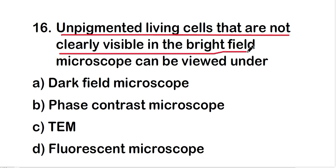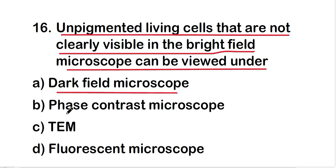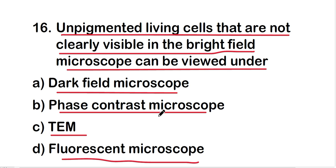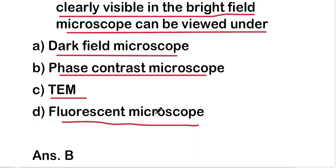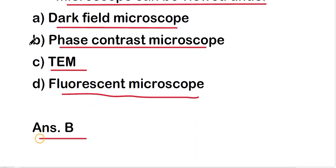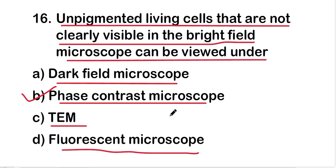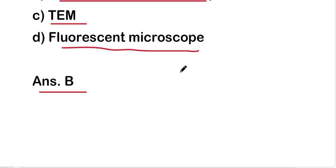Unpigmented living cells that are not clearly visible in the bright field microscope can be viewed under: dark field microscope, phase contrast microscope, TEM, or frozen microscope? The right answer is option B — phase contrast microscope. Unpigmented living cells not clearly visible in the bright field microscope can be viewed under the phase contrast microscope.